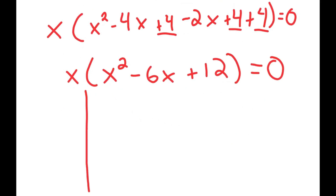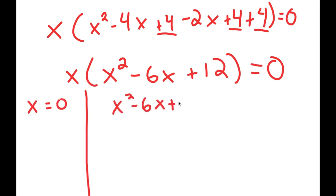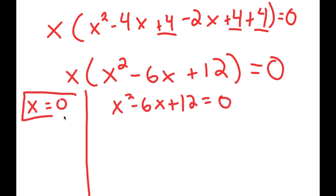From here, this gives me two equations. I get x is equal to 0, and I get x squared minus 6x plus 12 is equal to 0. So x equals 0 is already a solution.